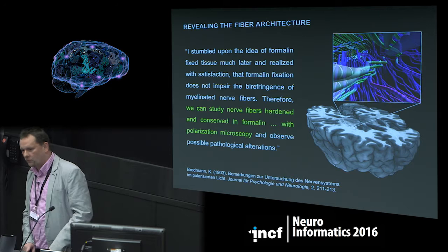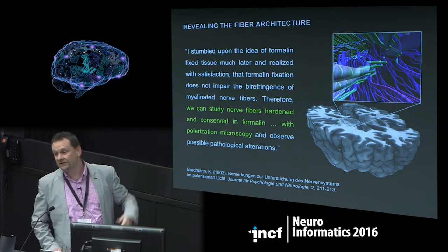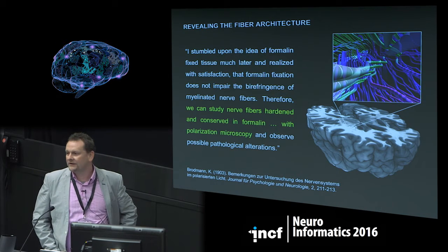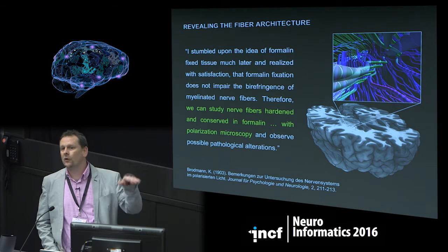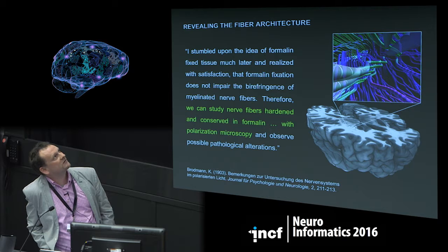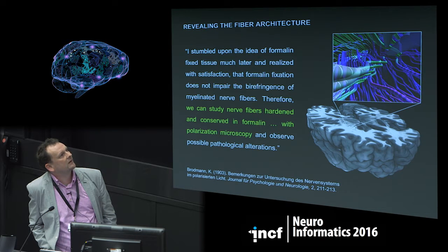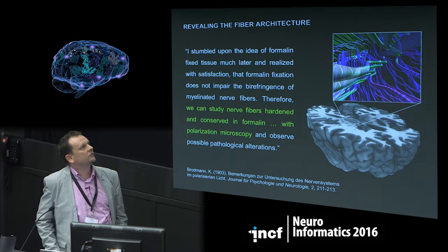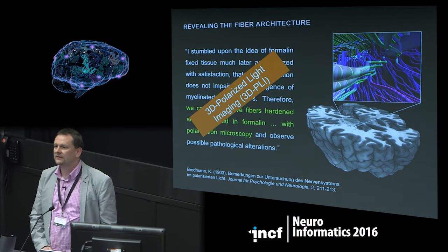What is polarized light imaging and how did it all start? We found a publication from Corbinius Brodmann from the early 1900s. He wrote: 'I stumbled upon the idea of formalin-fixed tissue and realized with satisfaction that formalin fixation does not impair the birefringence of myelinated nerve fibers. Therefore we can study nerve fibers hardened and conserved in formalin with polarization microscopy.' And this is exactly what we do in 3D polarized light imaging.